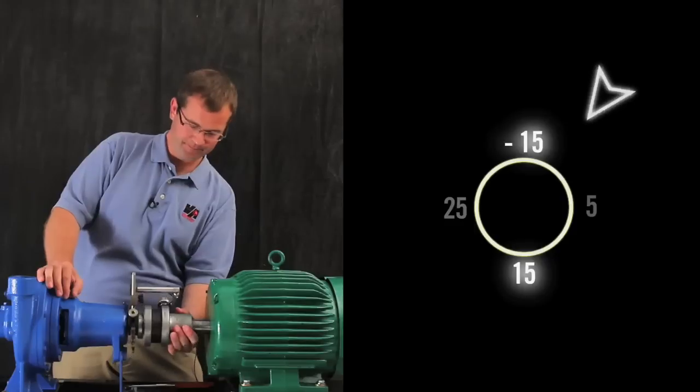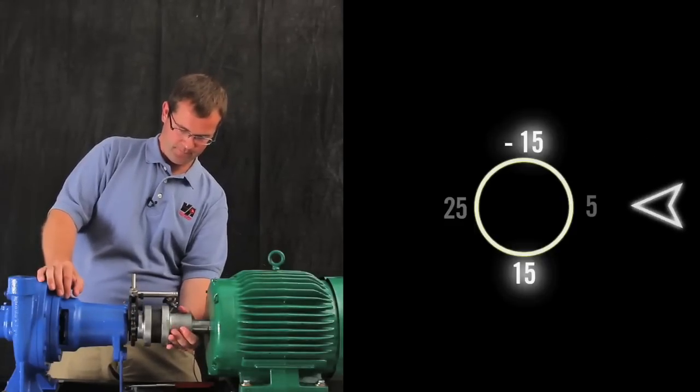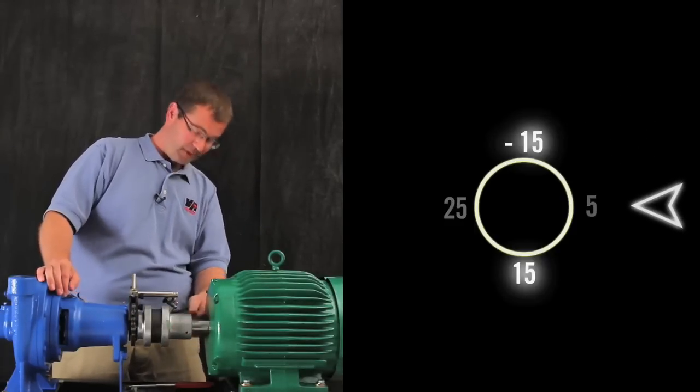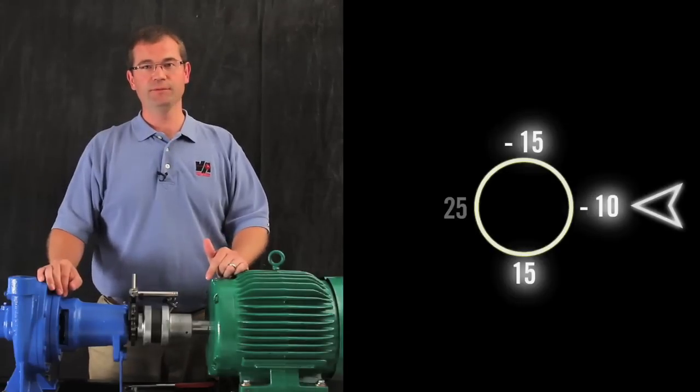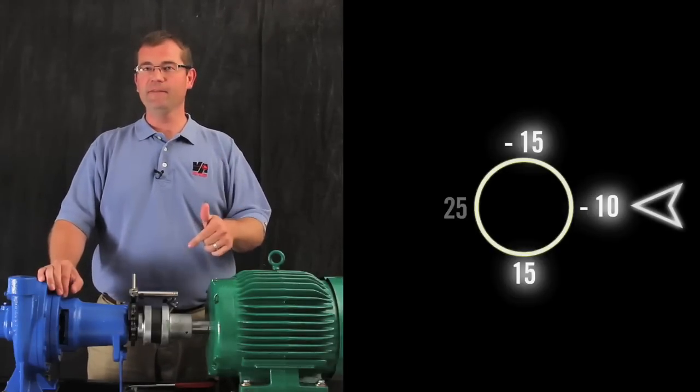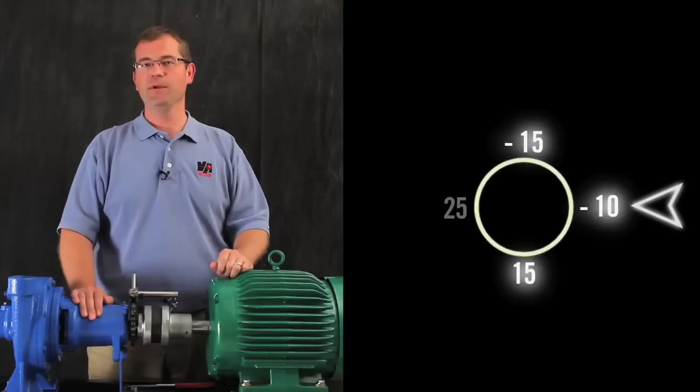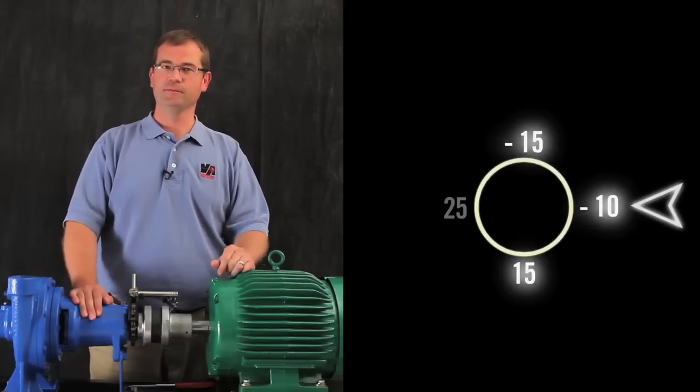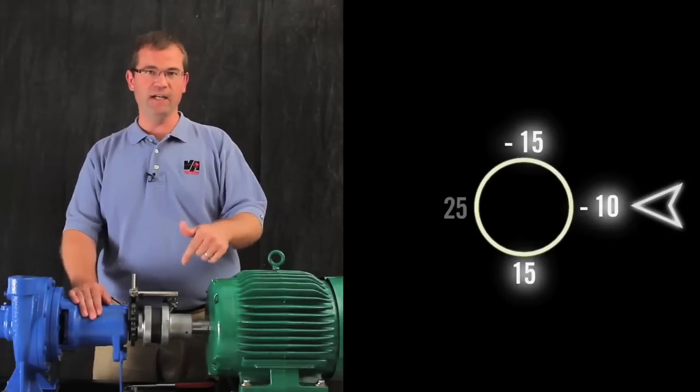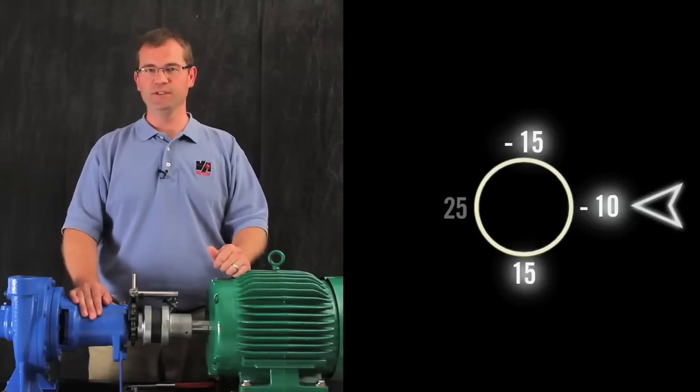Well, let's see. 10 mils, which is half of the TIR value that we got from before. Wherever we have the shafts rotated now, we're always reading true position.